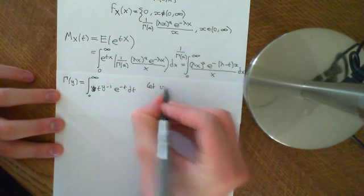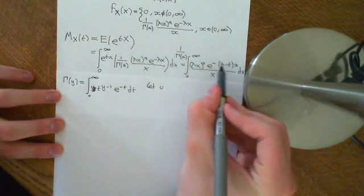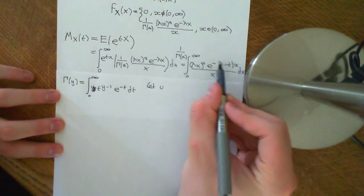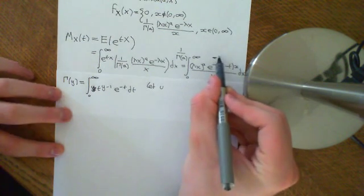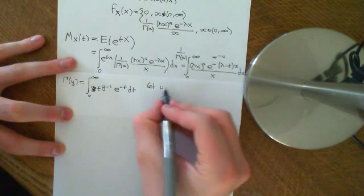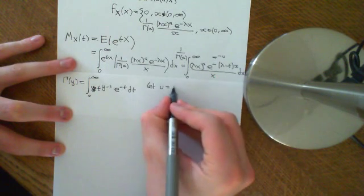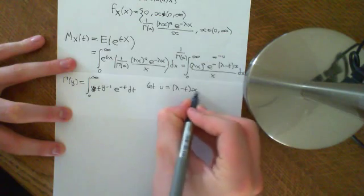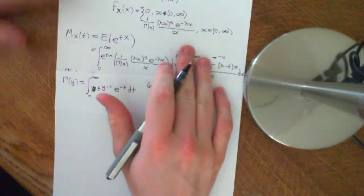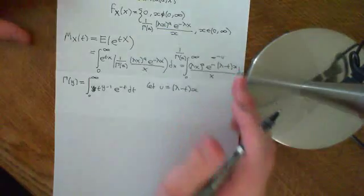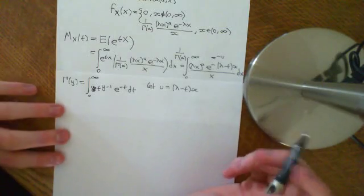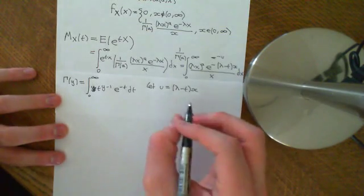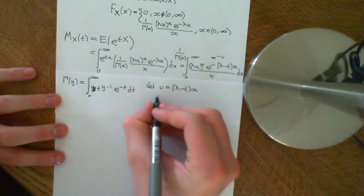We'd like something like t here, but of course we've already used t to mean this variable here, so we're not going to use the dummy variable t. Instead, we'll use the dummy variable u. We want basically this to be e to the negative u. So that means defining u to be equal to lambda minus t times x, which looks a pretty dangerous thing to do — it doesn't look as though it's going to end nicely. But in fact it is, so we're going to stick with that.